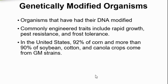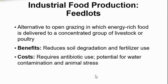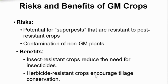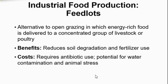Next we have the risks and benefits of genetically modified organisms. The risks include the potential for superweeds that are resistant to pest-resistant crops, and contamination of non-GM plants. The benefits include that insect-resistant crops reduce the need for insecticides and herbicides, and that herbicide-resistant crops can support conservation efforts.